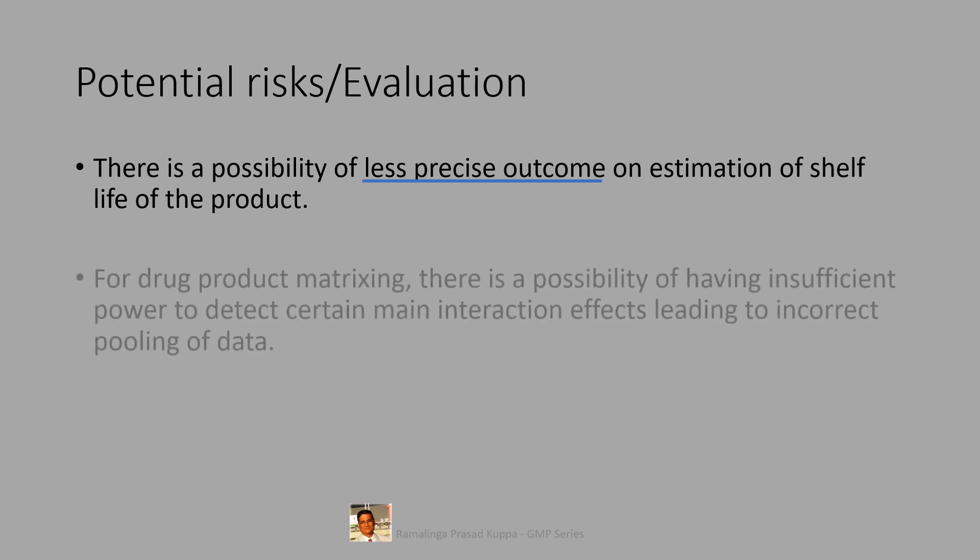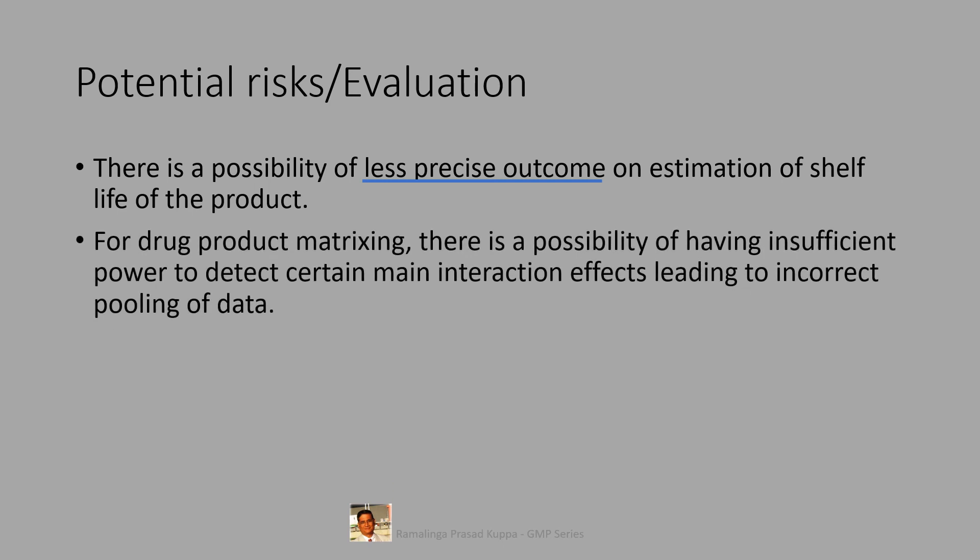For drug product matrixing, there is a possibility of having insufficient power to detect certain main interaction effects leading to incorrect pooling of data. For drug products, even if matrixing is done fully scientifically, incorrect pooling data may lead to insufficient power to detect such main interactions to establish the shelf life. Even excessive reduction in combination with insufficient capability to detect pooling can make it impossible to predict the shelf life.